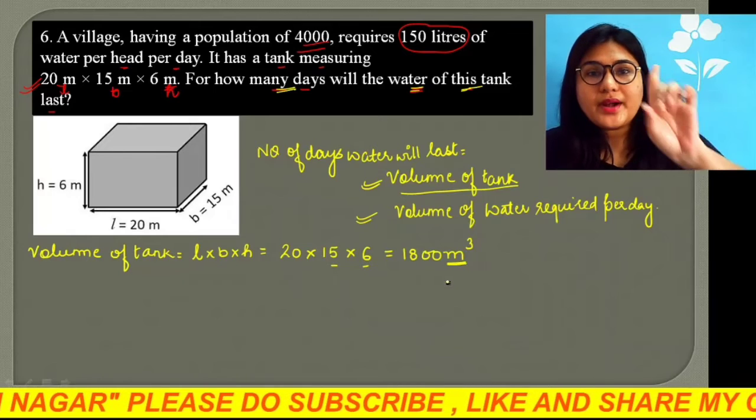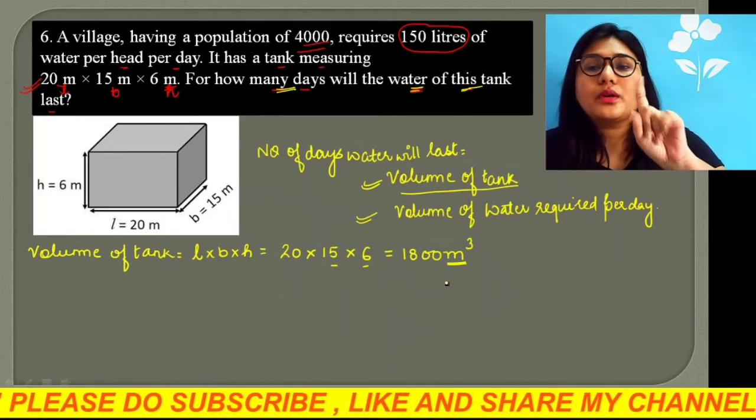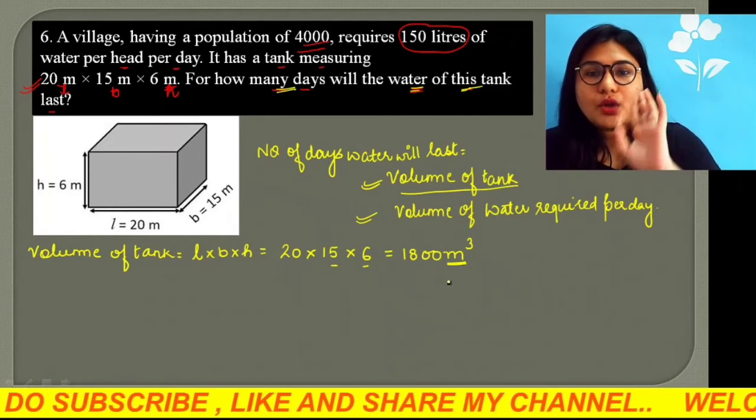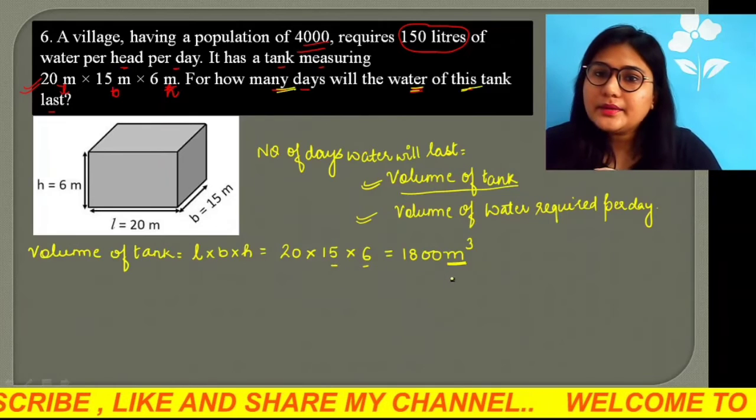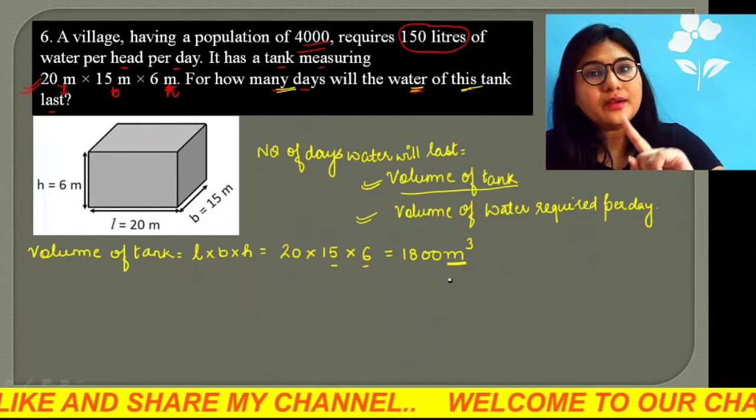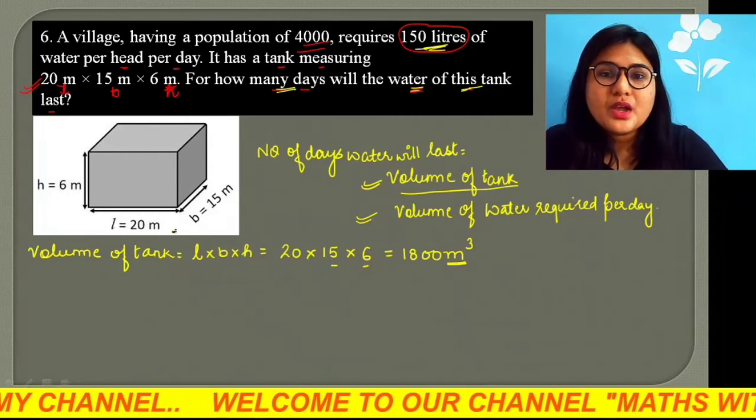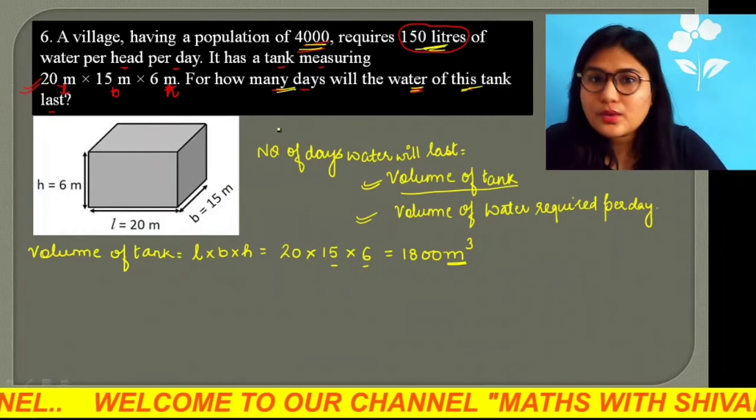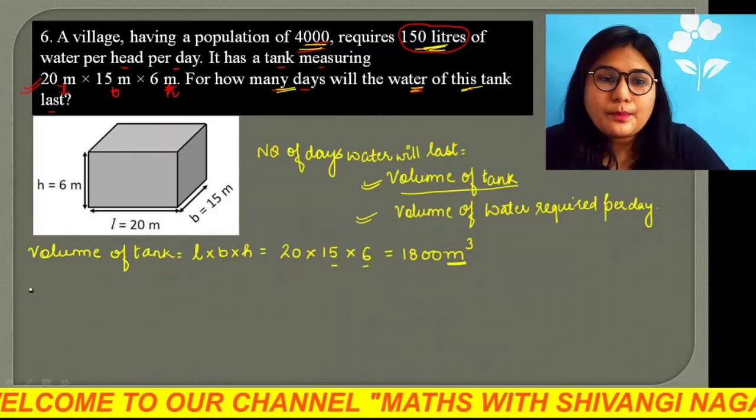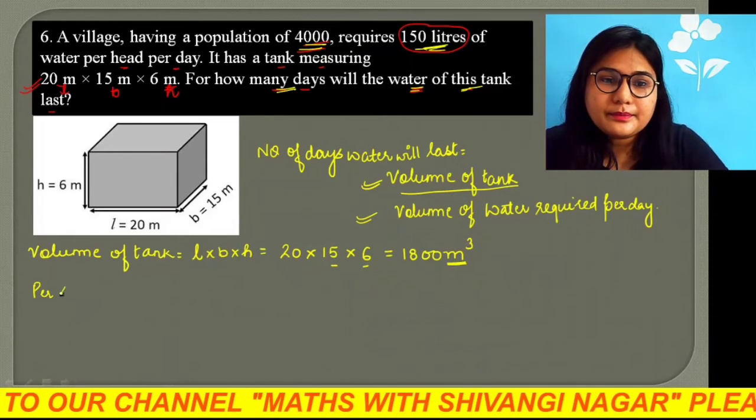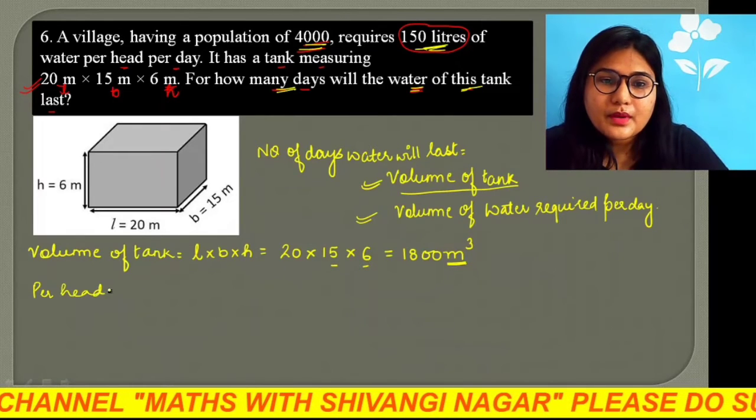Now, we have to find how much volume of water required in one day. So, how much per head is? How much per head one day is given. It is what? 150 liter. So, how much population is? 4,000 population per day. So, per head per day.